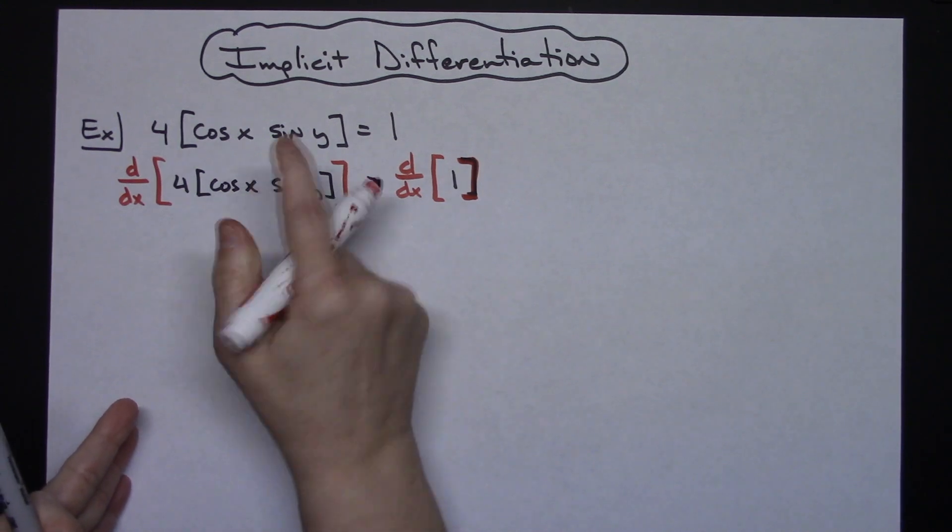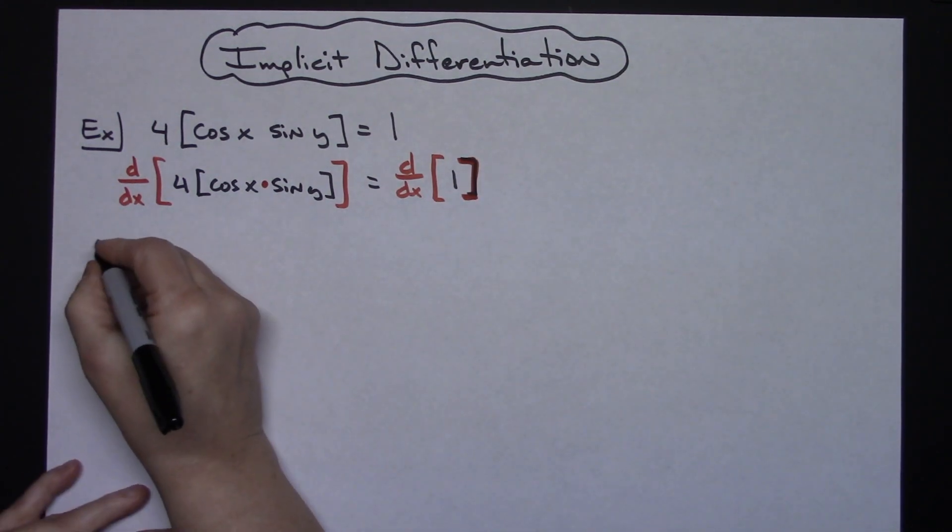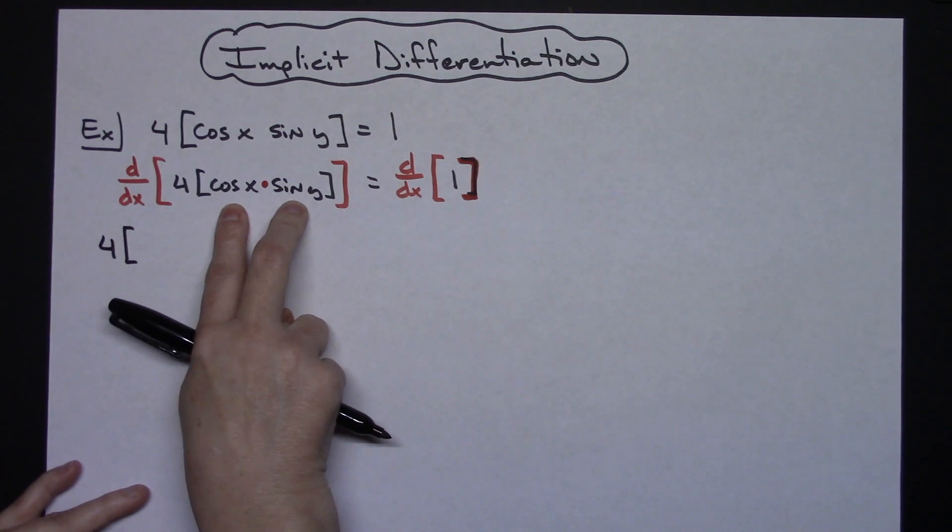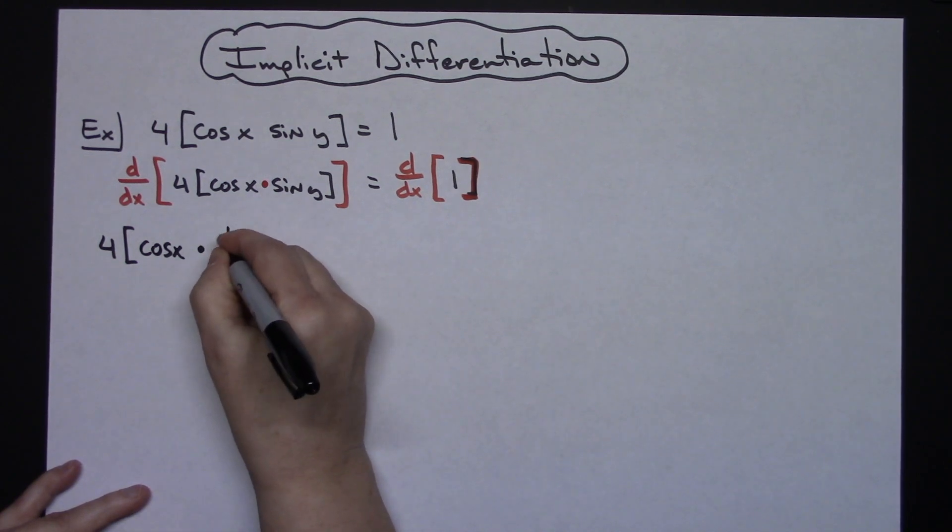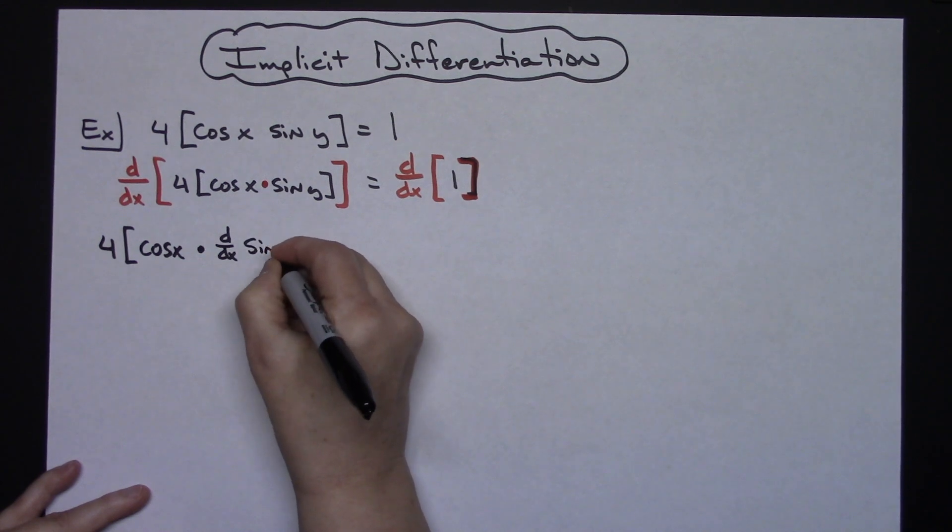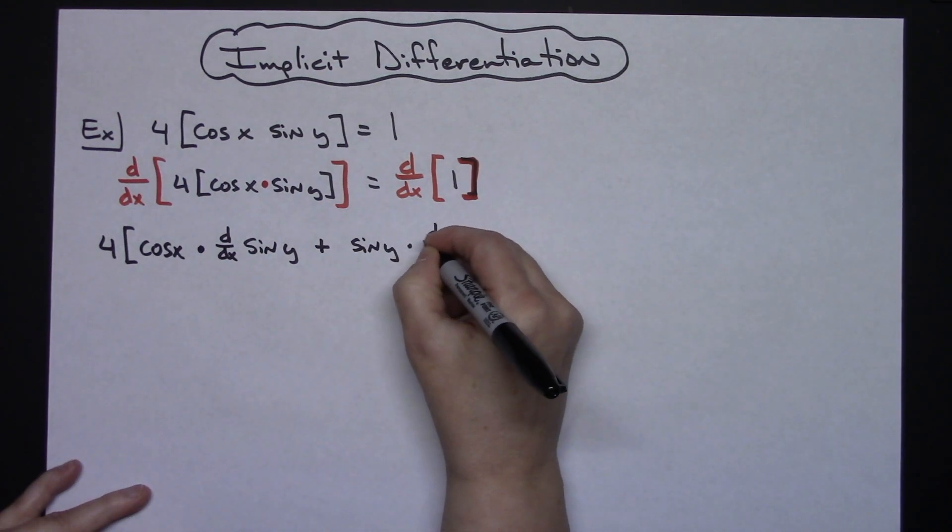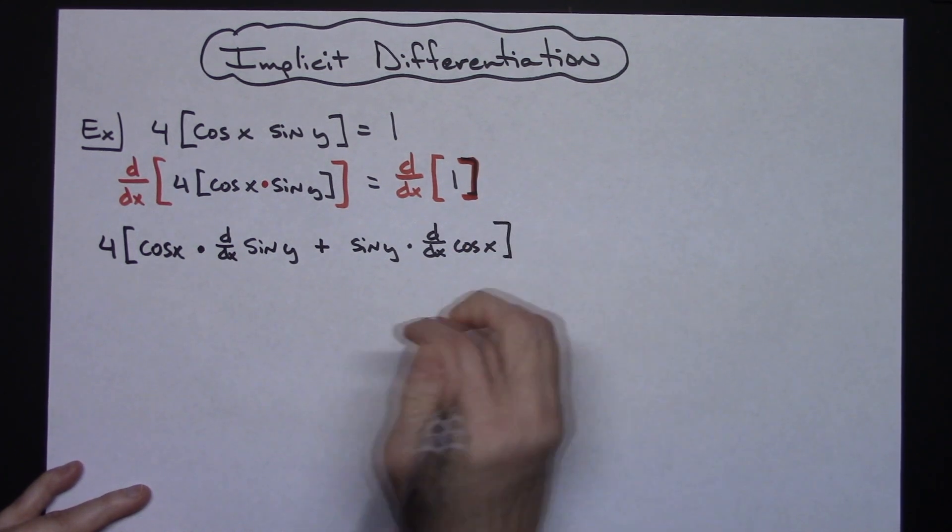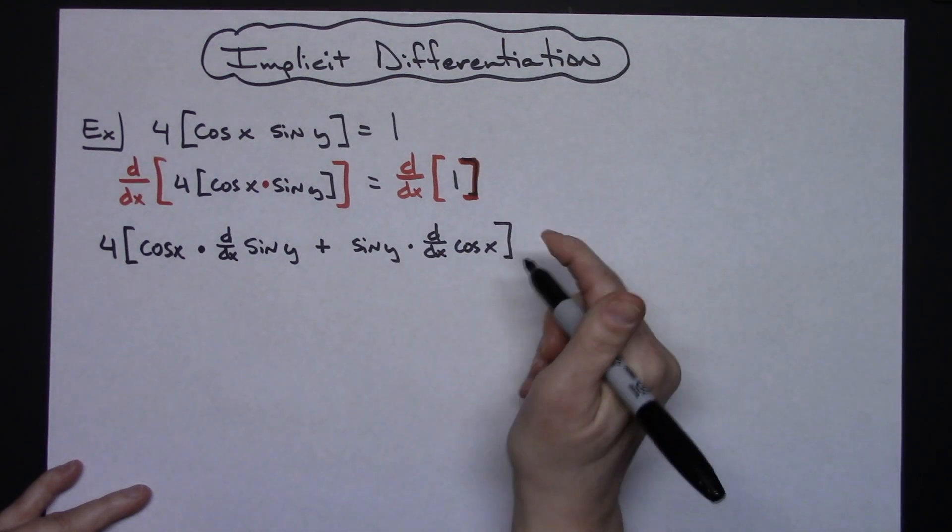All right this is clearly a product in there so I'm going to have product rule right here. When I take the derivative of the one that's just going to be a zero on that side. So I'm going to keep the four because we're just going to kind of let that hang out in the problem while we do this. I am going to use d/dx notation throughout this because I think it's going to be a little bit easier with it being implicit differentiation. So you have the first which would be cosine x times the derivative of the second so d/dx of sine y plus the second which is sine y times the derivative d/dx of cosine x.